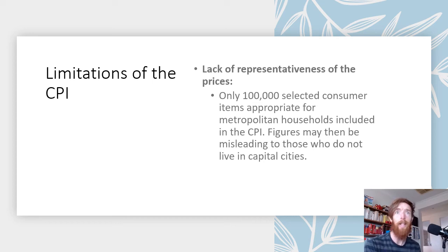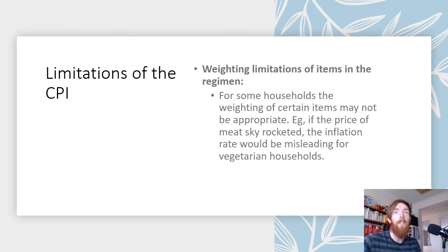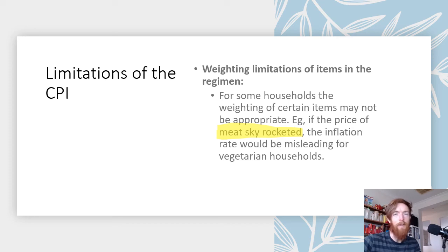There are limitations to the CPI. First, there's a lack of representativeness — because only around a hundred thousand goods and services are surveyed, and only metropolitan households are included, regional areas with very different consumption habits may not be accurately reflected. Additionally, weighting limitations mean the inflation rate can be misleading for certain households, such as vegetarians if meat prices skyrocket, since those goods are heavily weighted but not purchased by everyone.